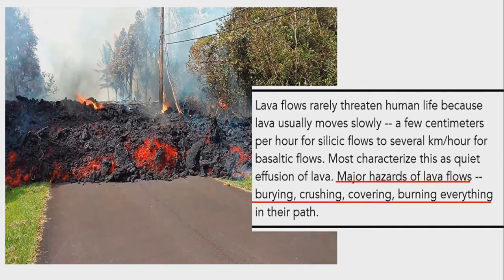So what are the hazards that lava flow can bring to people and the community? Lava flows rarely threaten human life because lava usually moves slowly — a few centimeters per hour for silicic flows to several kilometers per hour for basaltic flows. Most characterize this as quiet effusion of lava.